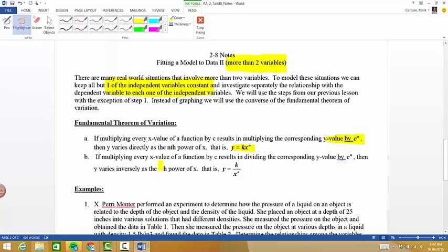If multiplying x has the opposite effect, or takes it and divides it by that c to the n, so if we multiply x by c and the corresponding y value is then divided by c to the n, we know that y varies inversely to the nth power of x. In other words, we'll have something of this form. So we'll take a look at how we can use that to help us as we go through a problem like this particular one.